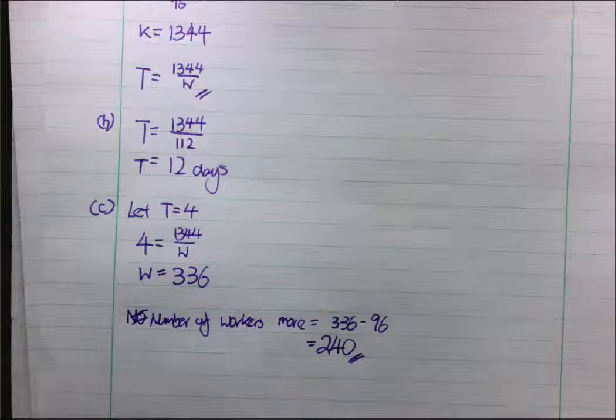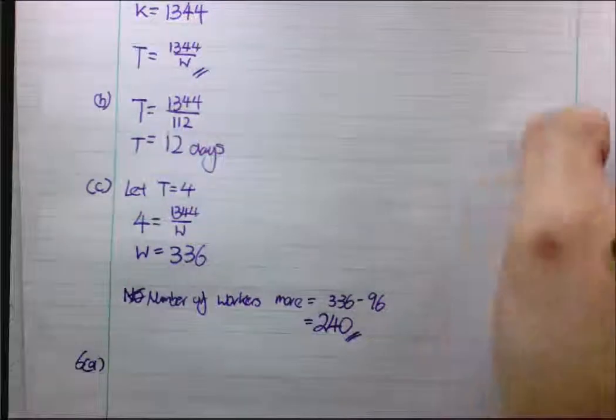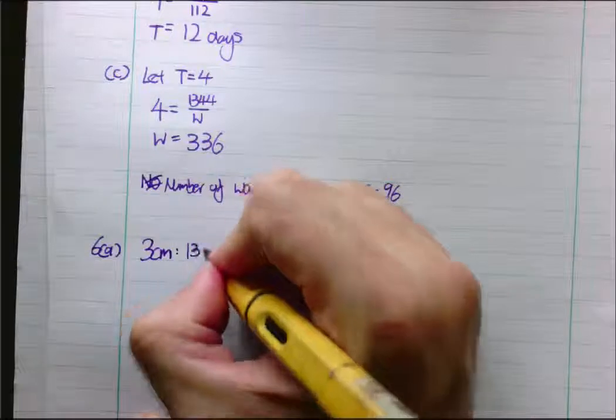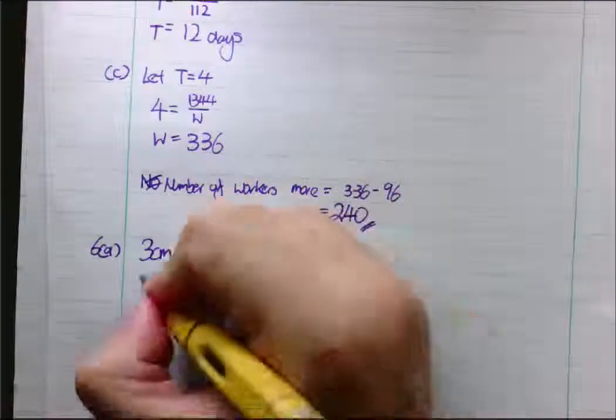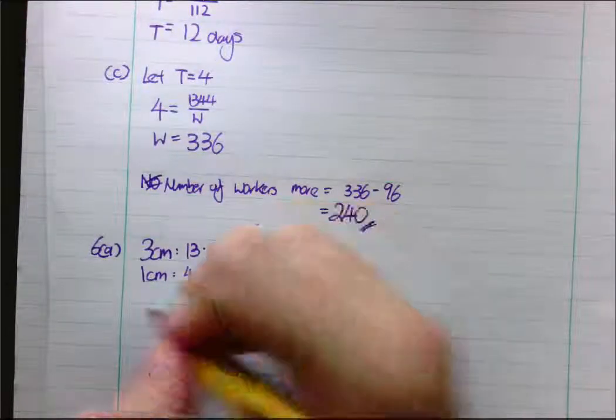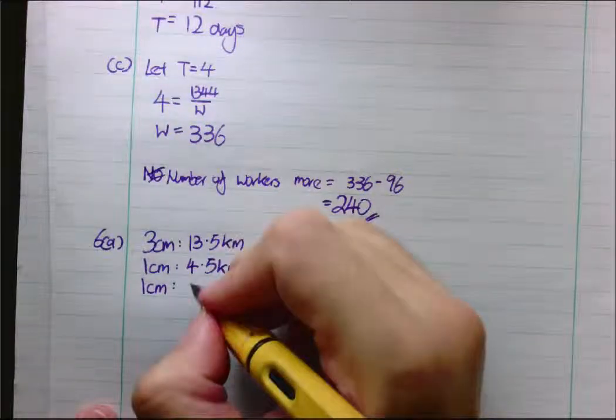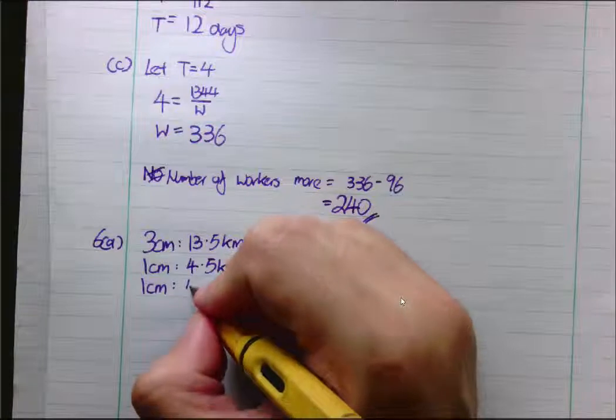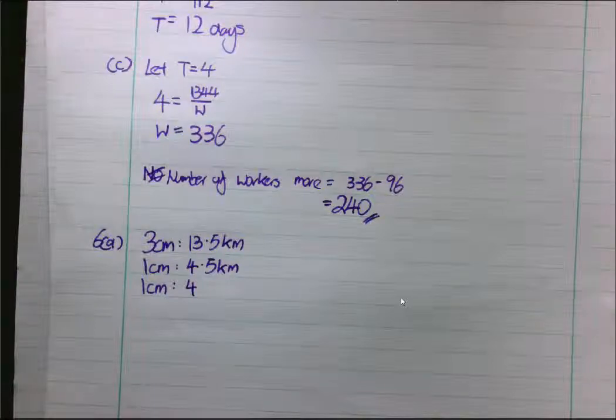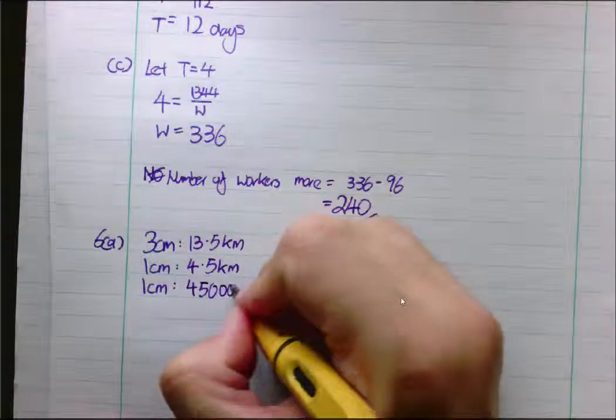Now, I will move on to question 6a. 6a, we talked about map scale. So, we know that 3cm represents 13.5km. 1cm represents 4.5km. For map scale, what happens is, both of them should have same units. So, I convert my 4.5km into cm. So, if you convert you times 1,000 and you times 100 again, you should get 450,000 cm.